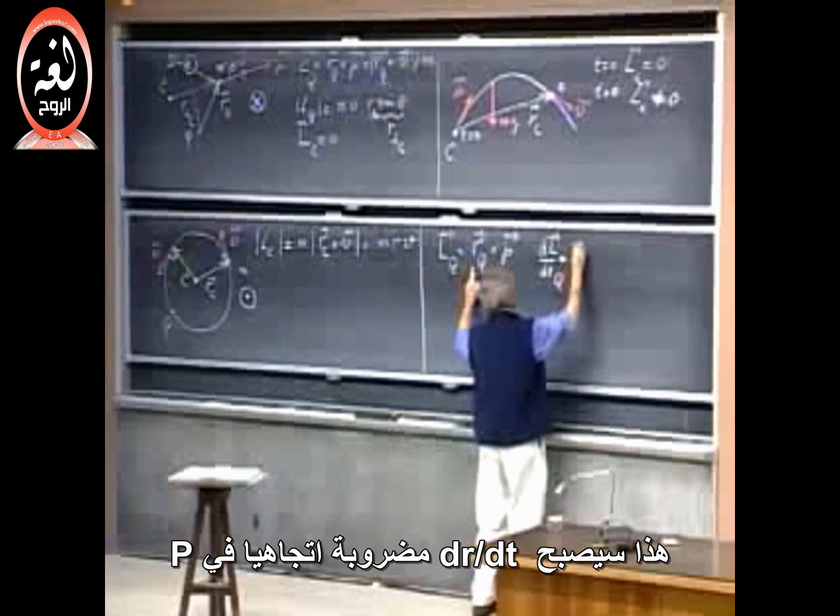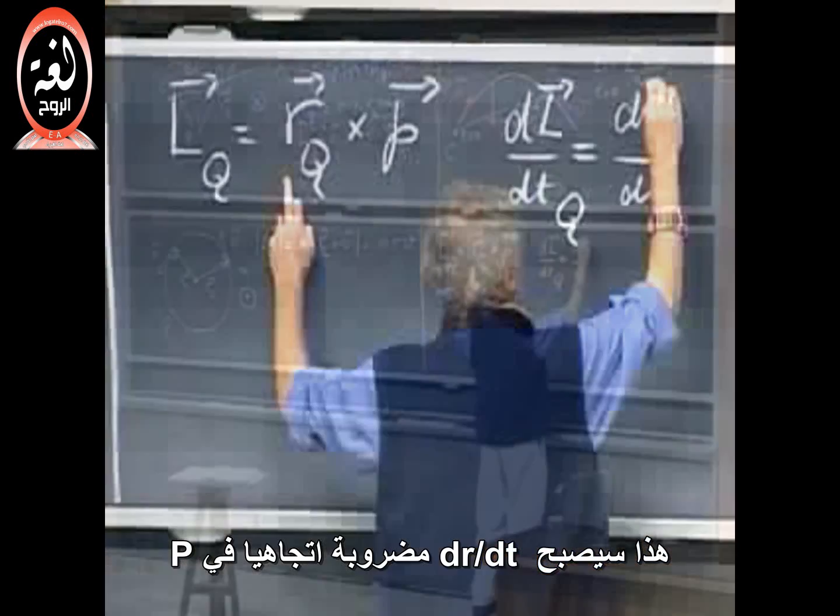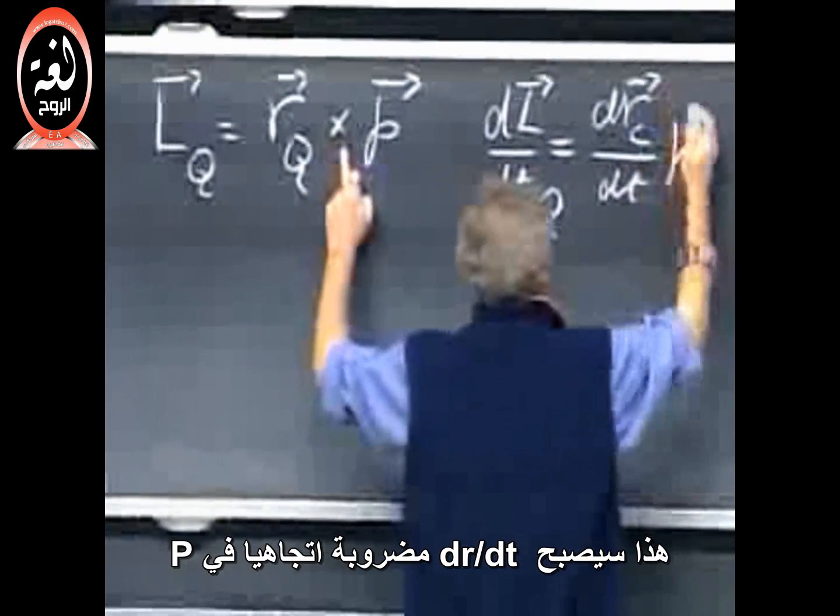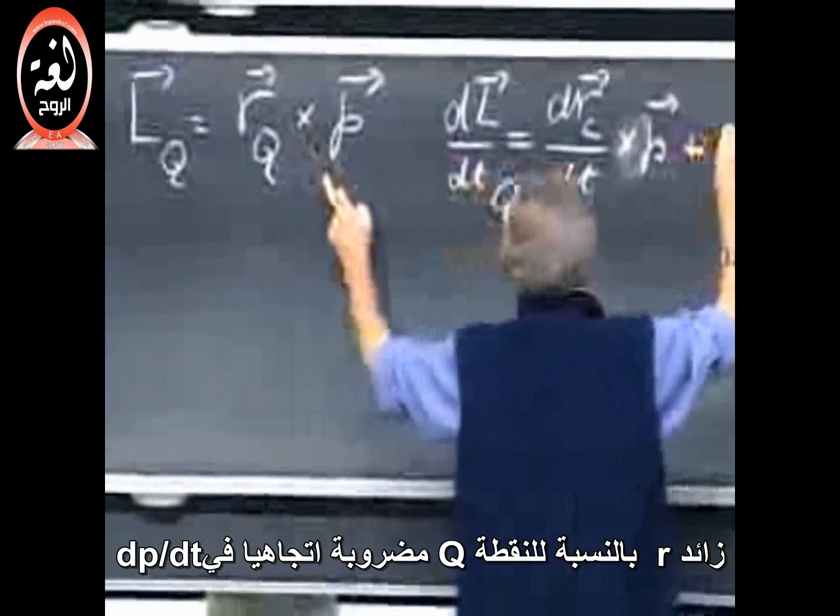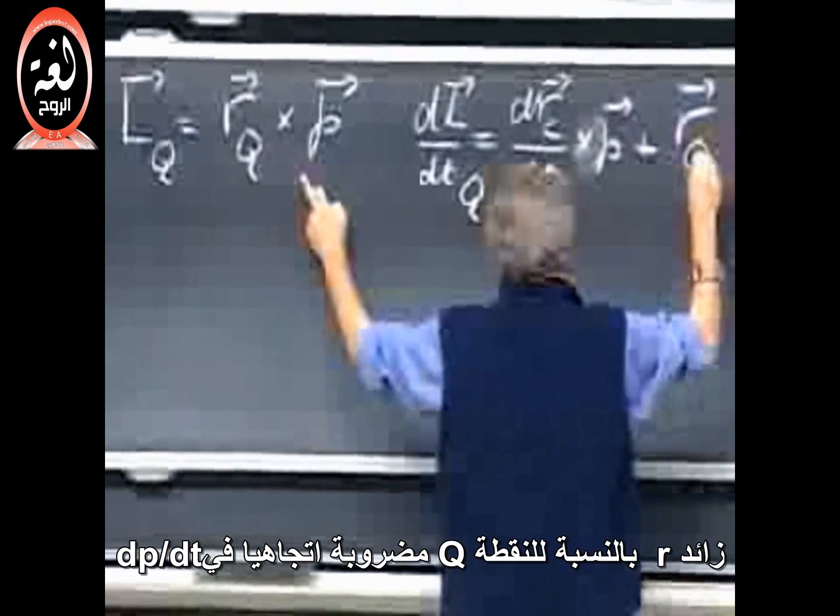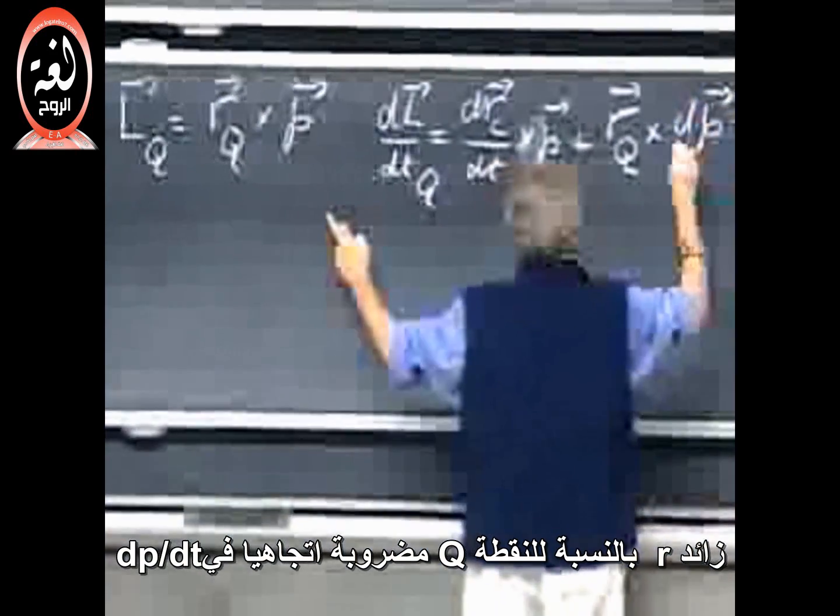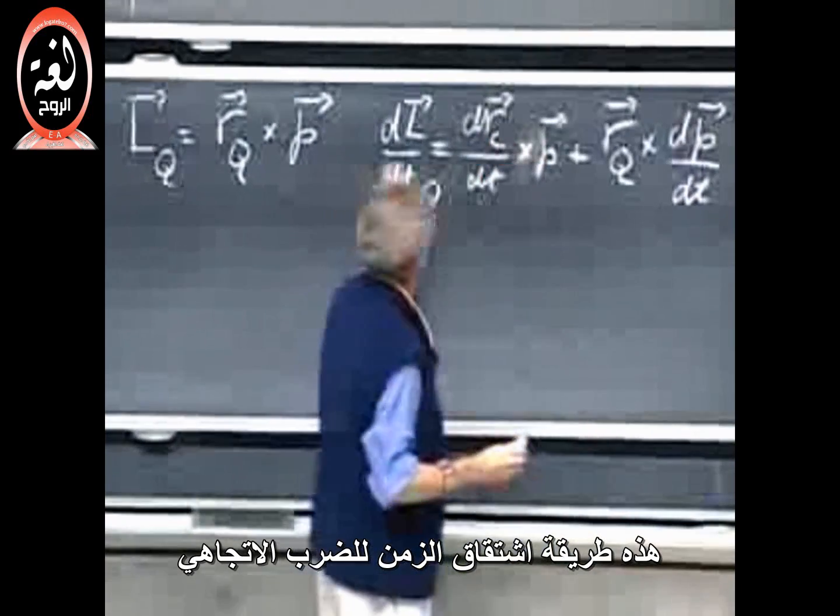That is going to be dR/dt cross P plus R of Q cross dP/dt. This is the way that you take the time derivative of a cross product.